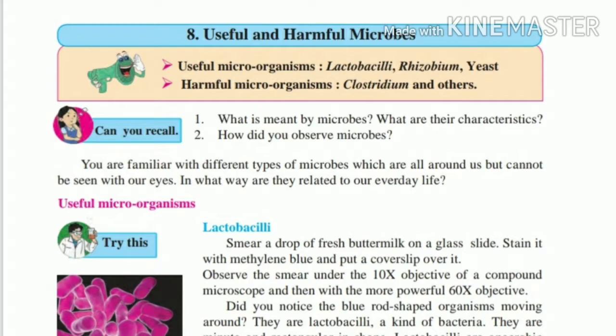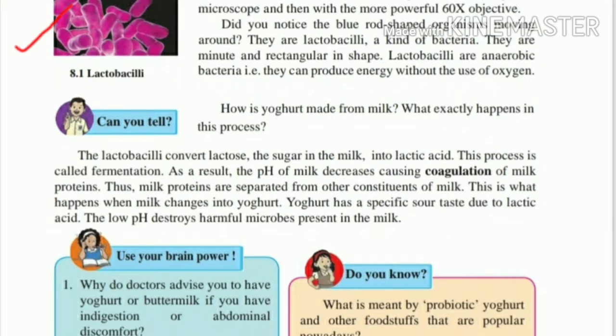Now you can observe the image of Lactobacilli under the microscope. In the microscope, you can see blue rod-shaped organisms. Here you can see the pink shape in the image, but under the microscope we see the blue rod shape. These are Lactobacilli — a kind of useful bacteria.